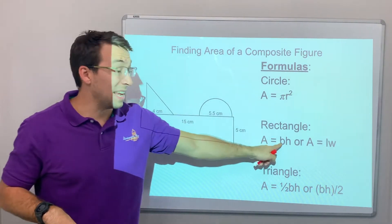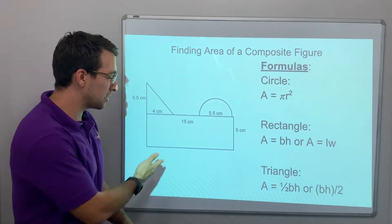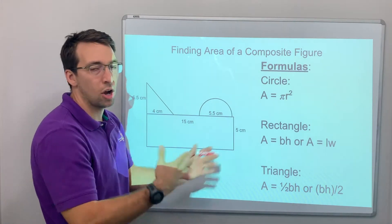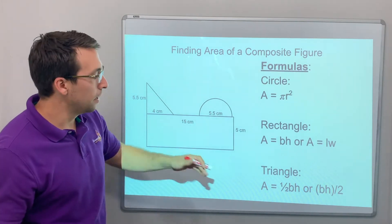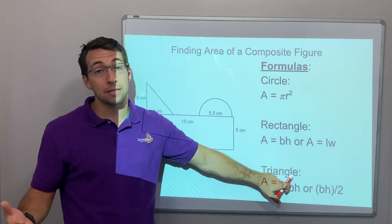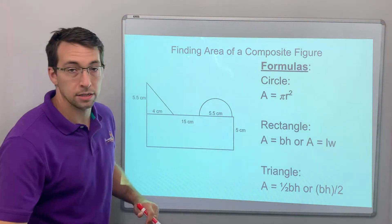Rectangle: area is base times height or length times width. Either way, so you have the base and the height or the length and the width. It doesn't matter. Those terms are interchangeable. And then a triangle: area is half of base times height or base times height divided by 2. So we'll get into that.